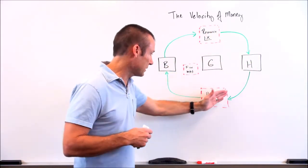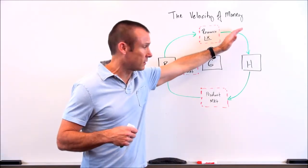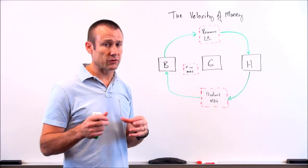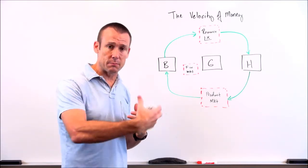Businesses use that revenue to pay for their resources, and that money then flows into households as income. So once again, spending flows into revenue, flows into income, flows back into spending. And there are leakages and injections, but that's the main way that money flows.